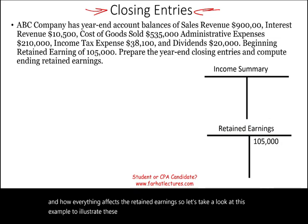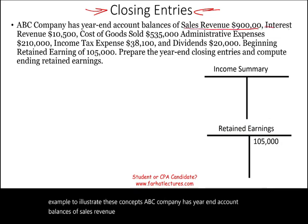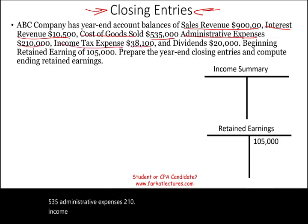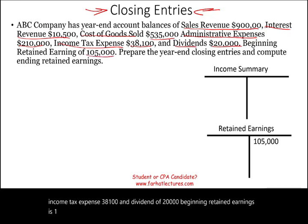ABC Company has year-end account balances of sales revenue $900,000, interest revenue $10,500, cost of goods sold $535,000, administrative expenses $210,000, income tax expense $38,100, and dividends of $20,000. Beginning retained earnings is $105,000. We're going to prepare the journal entries for the closing and compute the ending retained earnings.